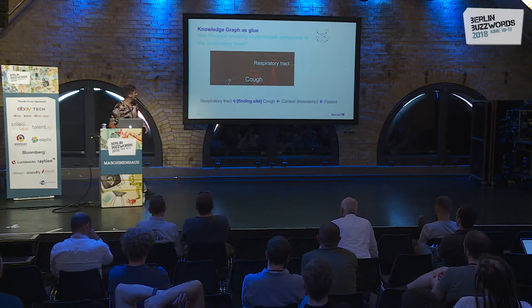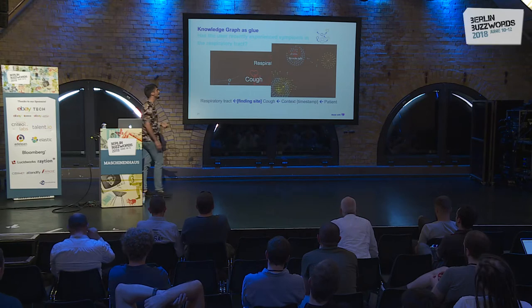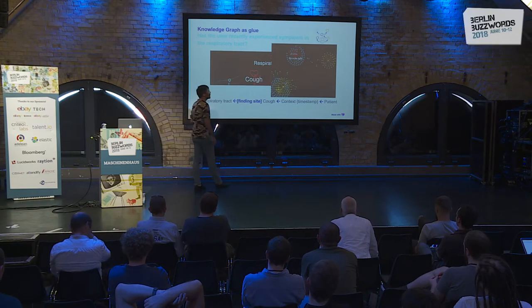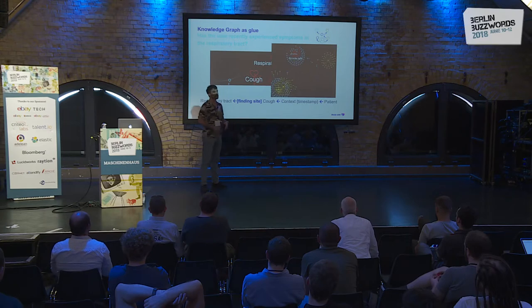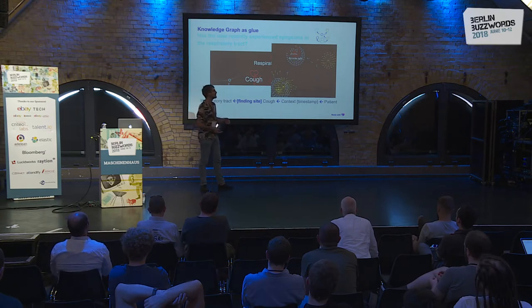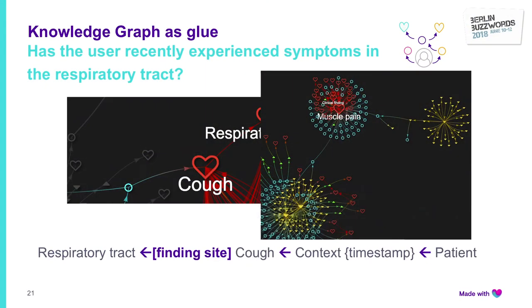This is quite powerful. We can use it to connect patients together. For example, if someone is reporting pain generically and someone else is reporting abdominal pain, we can find a path between these two users in the graph.